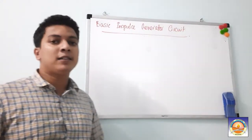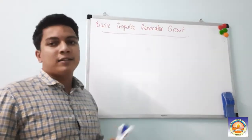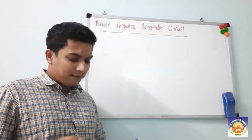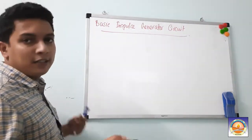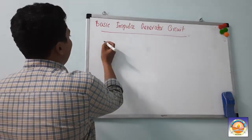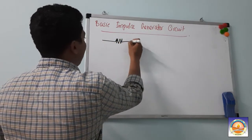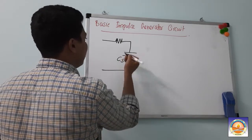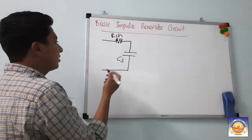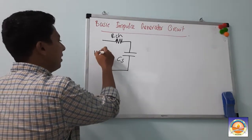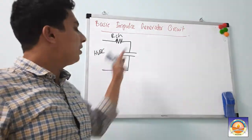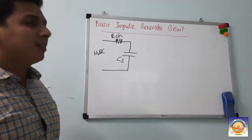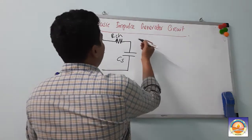Now let us see a basic impulse generator circuit in more detail. First, you need a high voltage source connected to your source capacitor CS. This is the source capacitor CS, this is the charging resistance RCS, and this is where you will be applying your high voltage DC to charge the source capacitor.